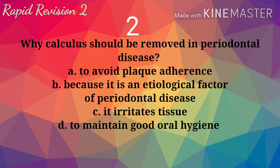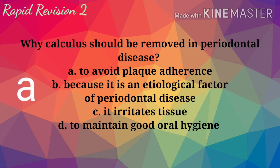Why should calculus be removed in periodontal disease? A. To avoid plaque adherence. B. Because it's an etiological factor of periodontal disease. C. It irritates tissue. D. To maintain good oral hygiene. Answer is A: to avoid plaque adherence.